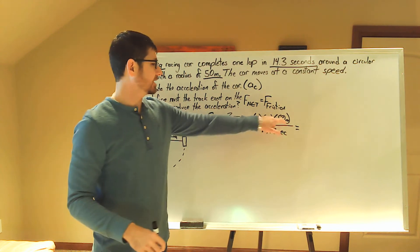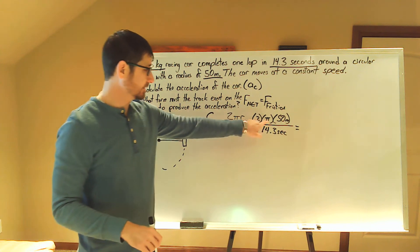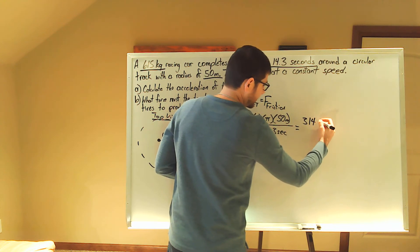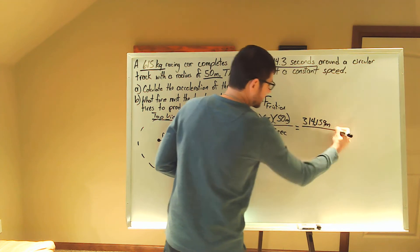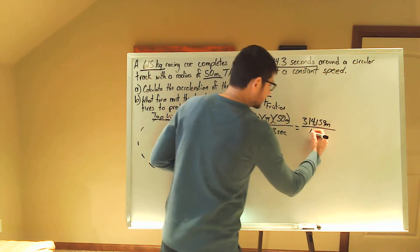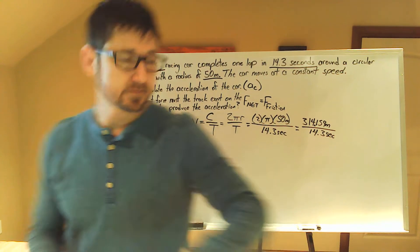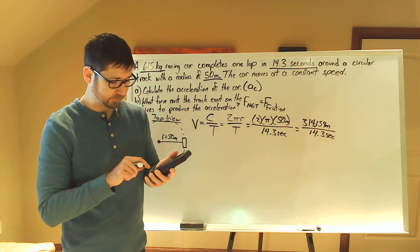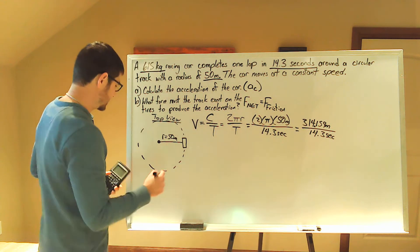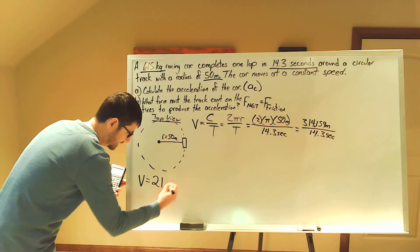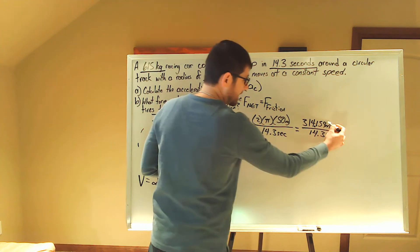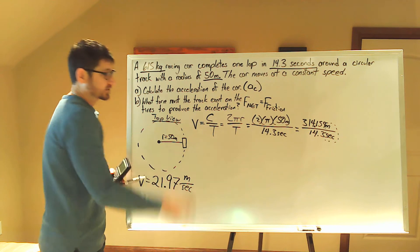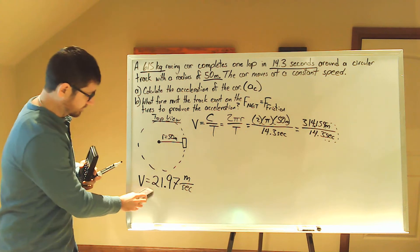In the numerator, 50 meters times 2 gives us 100 meters; 100 meters times pi gives us 314 meters. In the denominator, 14.3 seconds. So 314 divided by 14.3 — go ahead and get your calculator out — I get 21.97. Now let's take a look at our units: we have meters per second. So velocity is 21.97 meters per second.